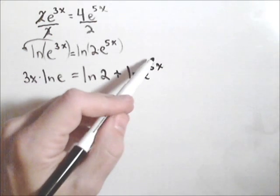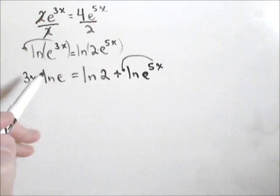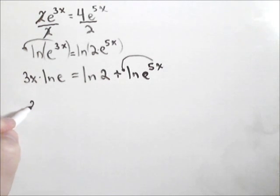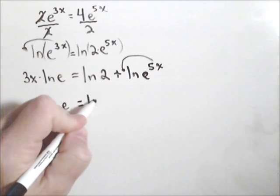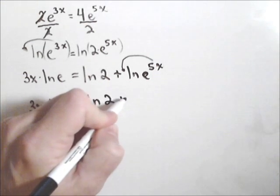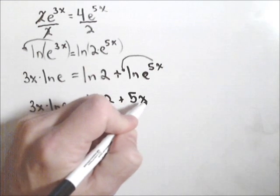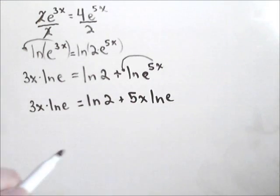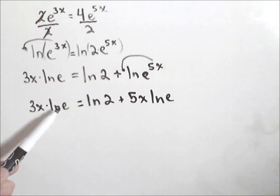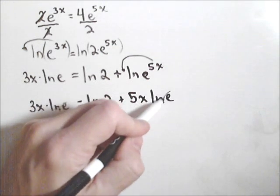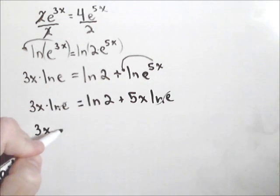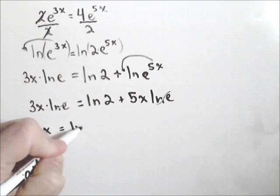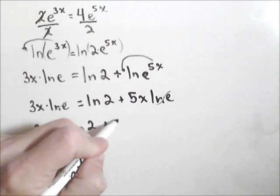Now here we can pull the exponent out front like we did over here. So we have 3x ln of e, which we'll get rid of here in a second, equals ln of 2 plus 5x ln of e. Now as we mentioned before, ln of e is just one, so those basically go away. And what we have is 3x equals ln of 2 plus 5x.